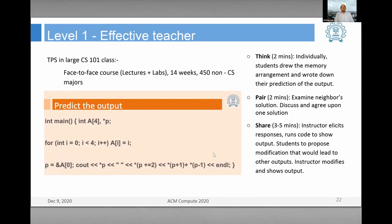Here's an example of carrying out think-pair-share in a large CS101 class. For two minutes the individual thinks individually, then for another two minutes they discuss with their neighbor, and subsequently they share their responses with the entire class. This example is for predicting the output of a particular program, showing how the think, pair, and share phases work out. Many such ideas are implemented in our classes almost routinely at level one.